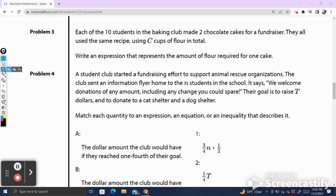Problem 3. Each of the 10 students in the baking club made two chocolate cakes for a fundraiser. Immediately looking at this question, I identified that for each student there were two chocolate cakes made, so there was a total of 20 cakes made at the fundraiser. I personally like writing down information as I get it. They all use the same recipe using C cups of flour in total. So total flour they used is equal to C.